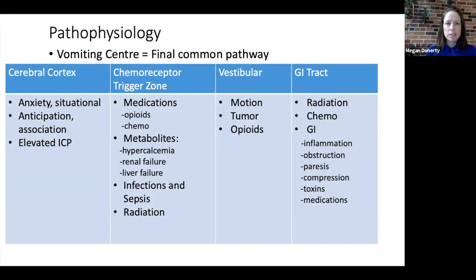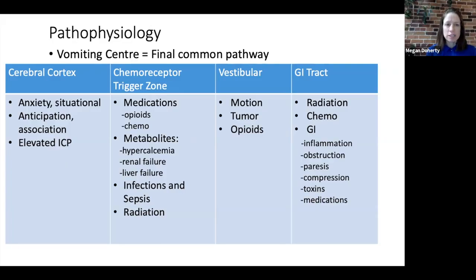Looking at some of the more common pathophysiological causes for vomiting and where they trigger: at the level of the cerebral cortex, vomiting can be induced by anxiety and situations. Particularly, children undergoing cancer treatment may develop anticipatory nausea or nausea associated with coming to hospital — this occurs before they even receive chemotherapy. Elevated intracranial pressure also plays a role at this level.